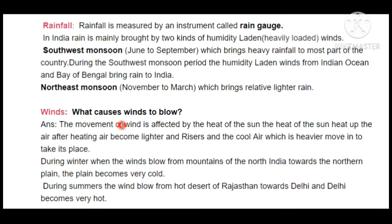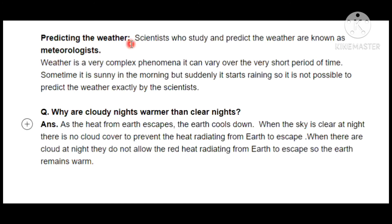Weather can only be predicted one day at a time — you will never see in the news a prediction for more than a few days with certainty. This is because weather is a complex phenomenon that changes on an hourly basis. Scientists who study and predict the weather are known as meteorologists. You may have noticed that sometimes they predict rain but it doesn't rain — that doesn't mean they predicted wrong, because weather depends on many factors: wind, rainfall, humidity, and temperature, all of which can change.